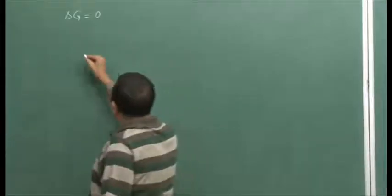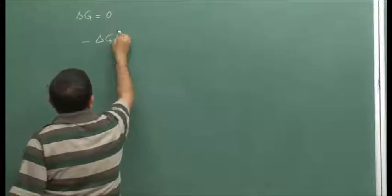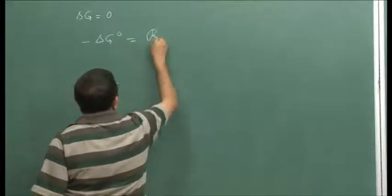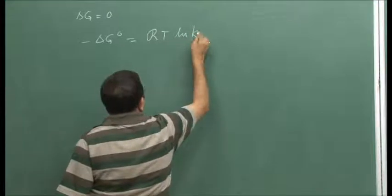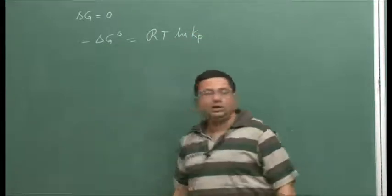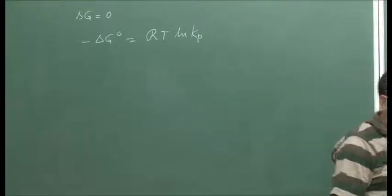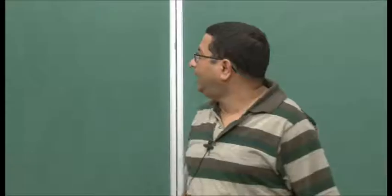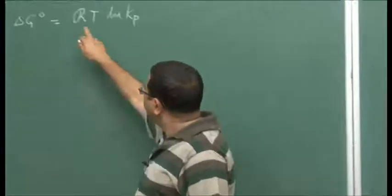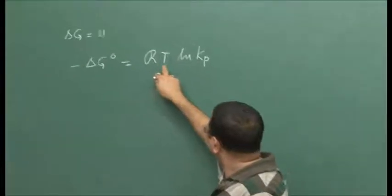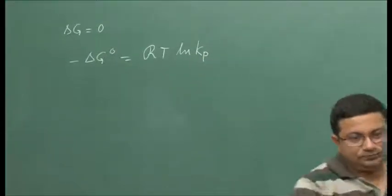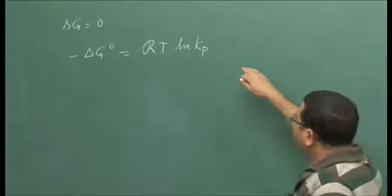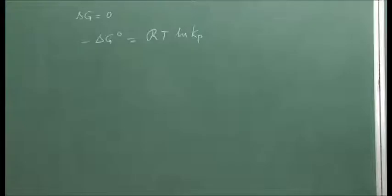From there we have shown that delta G naught is equal to minus RT ln Kp, where delta G naught is the change in Gibbs free energy at standard state, R is the universal gas constant, temperature in Kelvin, and Kp is the equilibrium constant, defined for standard pressure P naught equal to 1 atmosphere.